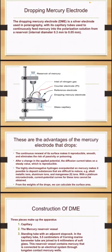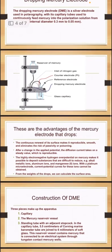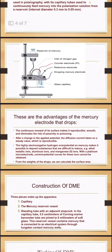The advantages of the mercury electrode: the continuous renewal of its surface makes it reproducible, smooth, and eliminates the risk of passivity or poisoning. After a change in the applied potential, the diffusion current takes on a steady value which is reproducible.